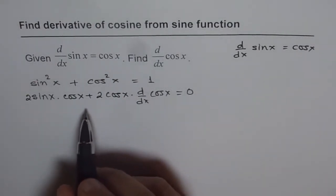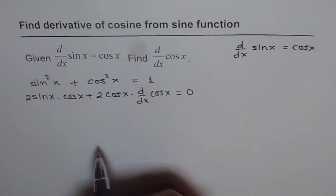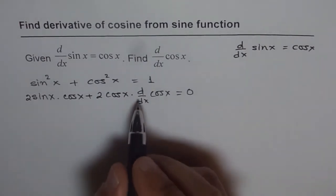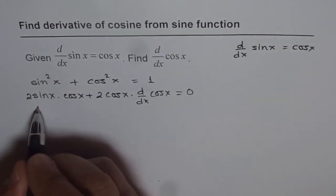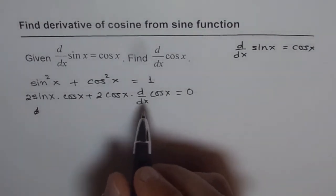Now we can rearrange this equation and find derivative of cos x. So that's the whole idea. So now we can have d/dx of, or rather, let's do it in two steps. So what we'll do is,